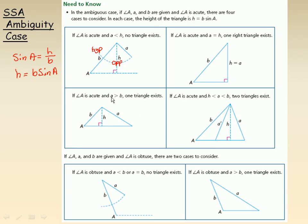If A is larger than B in this diagram, then the only way to draw a triangle is if A comes out in this direction — it can't come back in this direction. So one triangle exists if A is bigger than B. The ambiguity is when A is between the height H and side B — that was the case in the previous example. Then you could draw A in this direction or in this direction. It's bigger than H but less than B, so that's the ambiguous case where two possible triangles exist.